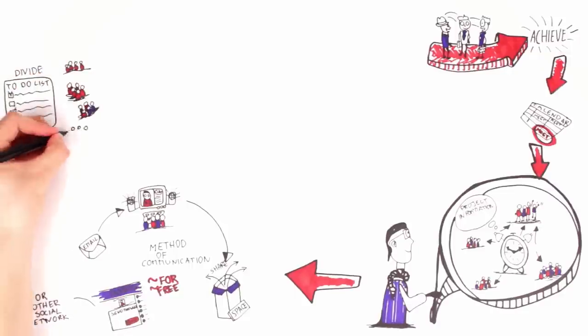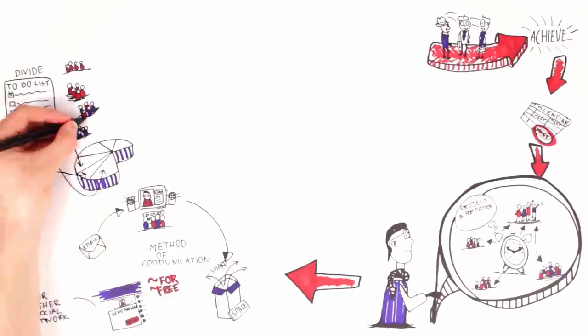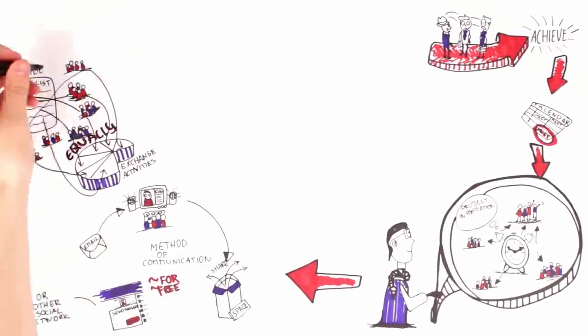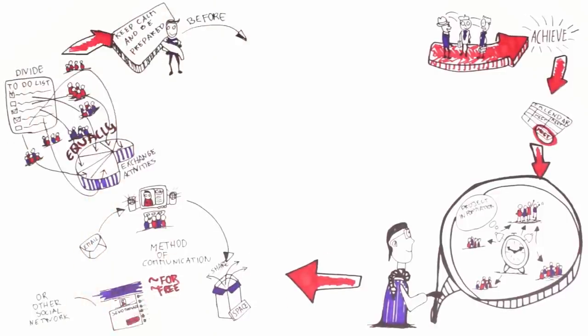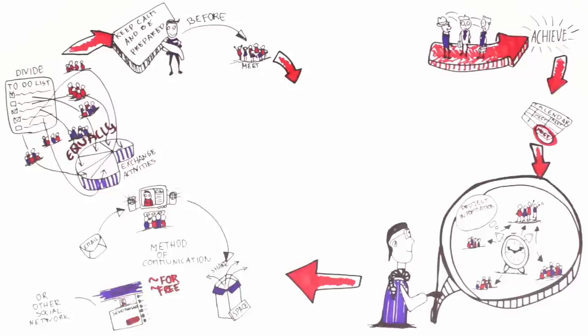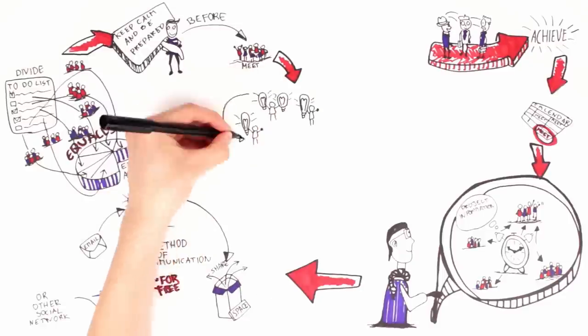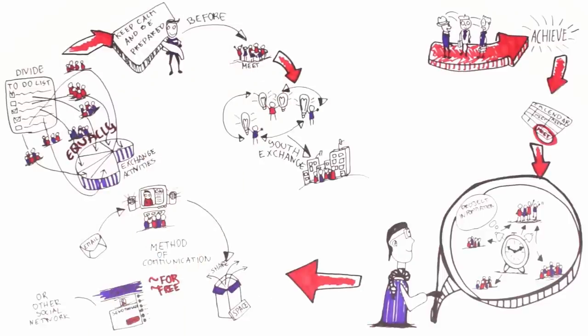Divide tasks and responsibilities with your partner groups to ensure an equal contribution to the exchange activities. Discuss necessary preparation activities before the groups meet. Share any ideas of how to disseminate the exchange results during the follow-up phase to broaden the exchange's impact on local communities.